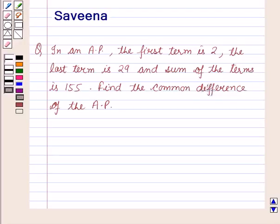Hello and welcome to the session. In this session we will discuss a question which says that in an AP, which is arithmetic progression, the first term is 2, the last term is 29, and sum of the terms is 155. Find the common difference of the AP.